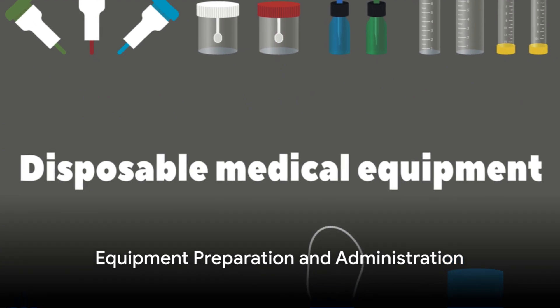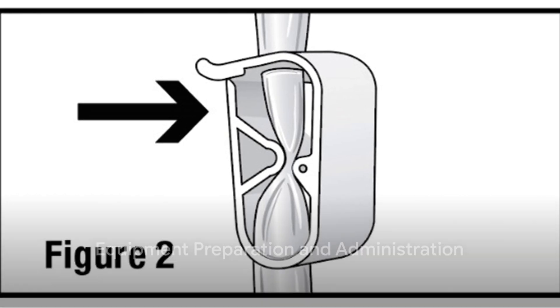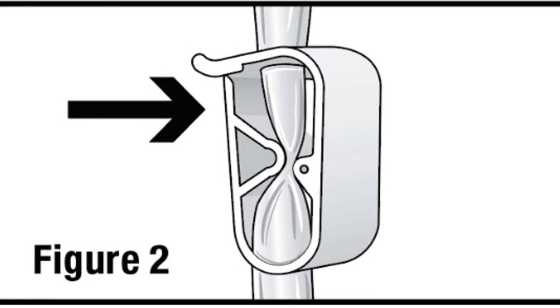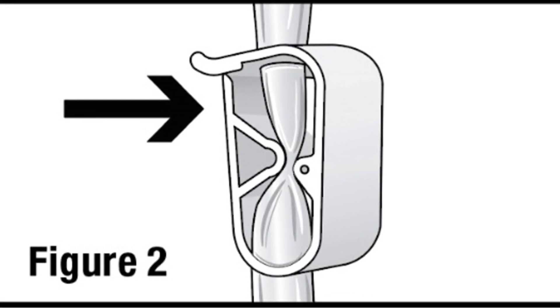When it comes to equipment preparation, inspect the administration tubing for any potential damage. Open the administration set and close the pinch clamp by pushing the clamp until it is fully closed.